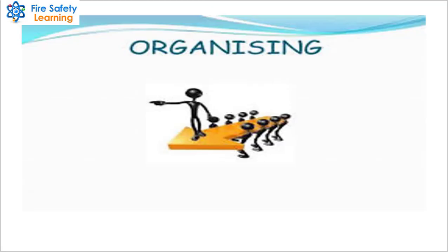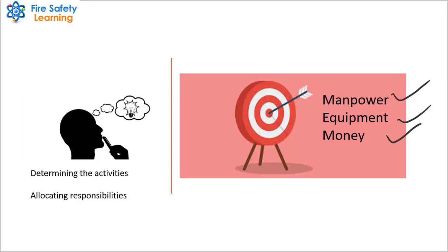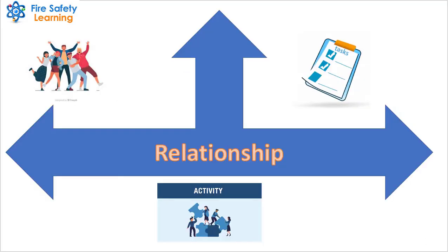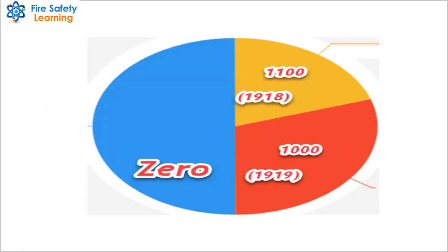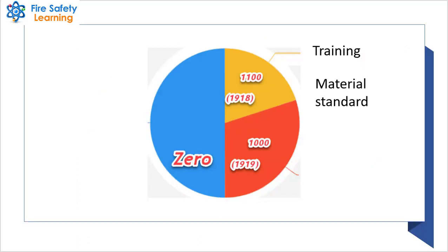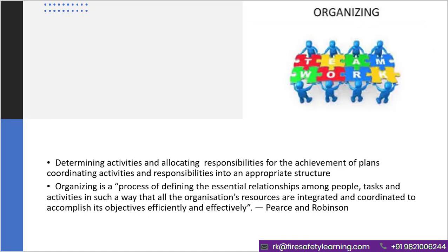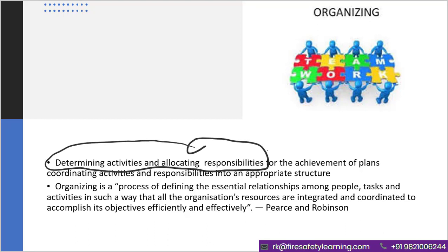Organizing means apni planning ke according apni resources — jaise ki manpower, equipment, aur money ko — systematic tariqe se organize karna. It is the process of defining the essential relationships among people, tasks, and activities. As per activity, deciding and allocating responsibility and resources to individuals is called organizing.